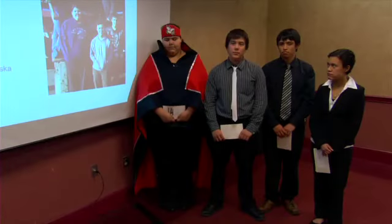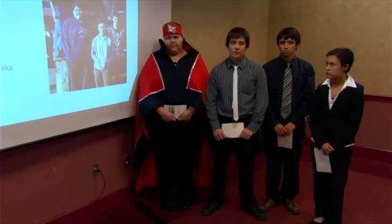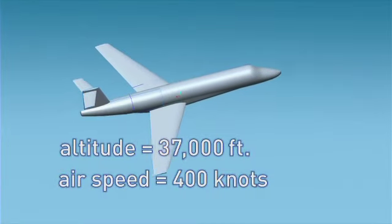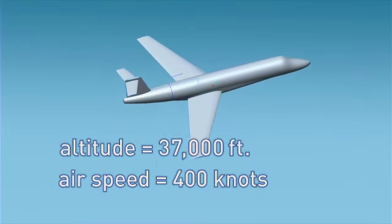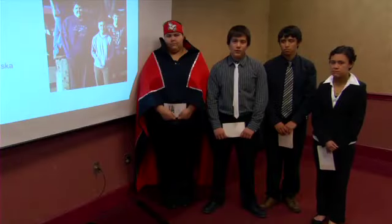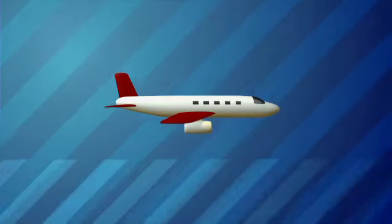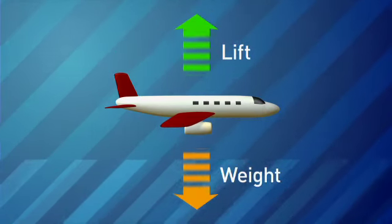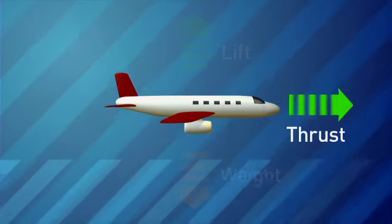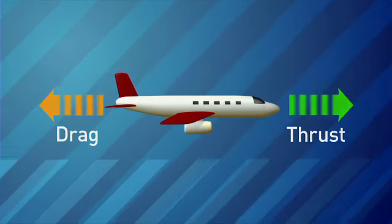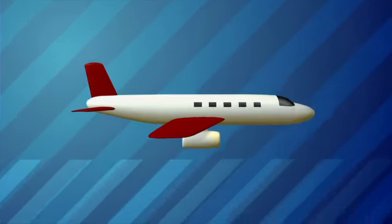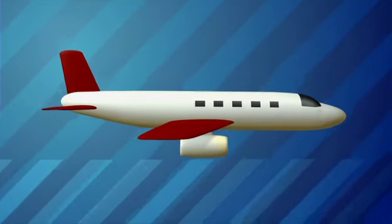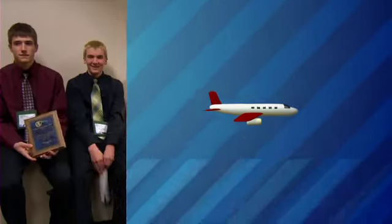You had to balance lift and weight, drag and thrust, because the plane was traveling at 37,000 feet at 400 knots. For any aircraft, lift works opposite to weight and thrust works opposite to drag. To design a plane that flies level and straight, the students had to learn a lot about these four forces.